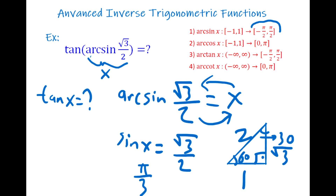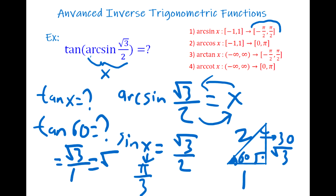We are looking for tangent x, and x is 60°, so we need tangent 60°. Suppose you don't know tangent 60° — if you draw this special right triangle, you can find it easily. Tangent is opposite divided by adjacent. From the 60° perspective, opposite is √3 and adjacent is 1, so it is √3/1 = √3. The answer is √3.